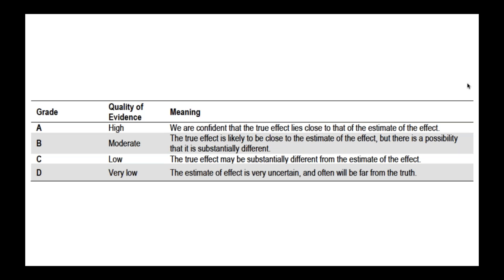That number is followed by a letter A, B, C, or D indicating the quality of evidence reviewed to make that recommendation. The quality of evidence can be high, moderate, low, or very low. High quality means we are confident the true effect is very close to the actual estimate, whereas grade D means the estimate of effect is very uncertain and likely to be far from the truth.